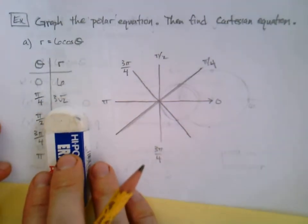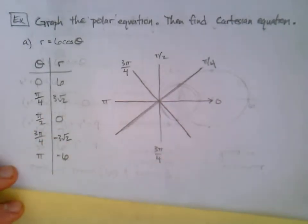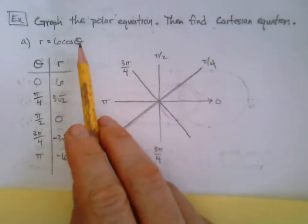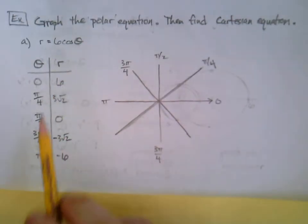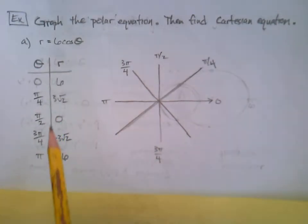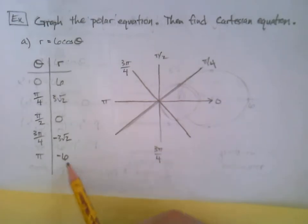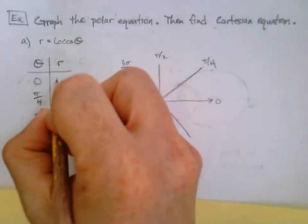And I'll just show you the rest. Pi over two, cosine is zero. Three pi over four, I've got negative root two over two times six. And finally at pi I get negative one times six is negative six.